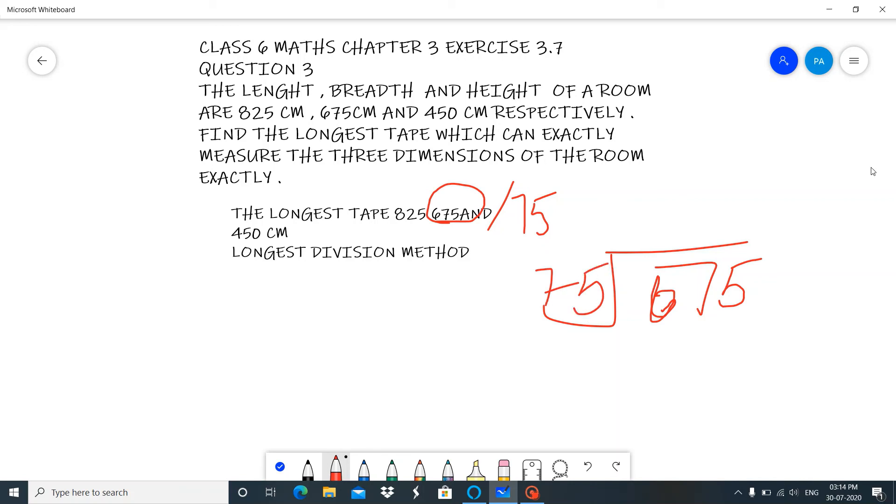This is going to be 9. 75 times 9 is 675. So, 675. We got cut. So, the answer we got is HCF equals to 75.